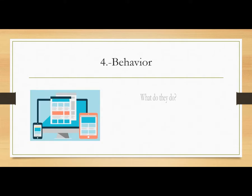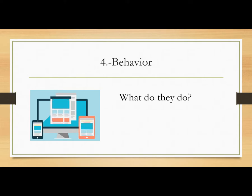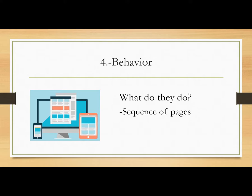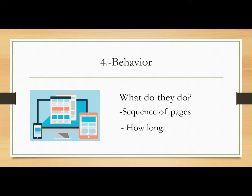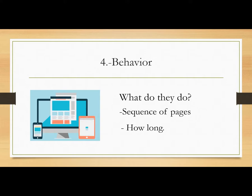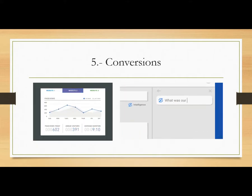Number four will be Behavior. This talks about the experience that users are having in your website — what they actually do, the sequence of pages they visit, if they go to the home page and then to the gallery, or if they visit the gallery first and then go to buy a specific item. You will also be able to get information on how long they are staying on any specific page — if they spend more time in the gallery or more time trying to buy a specific product.